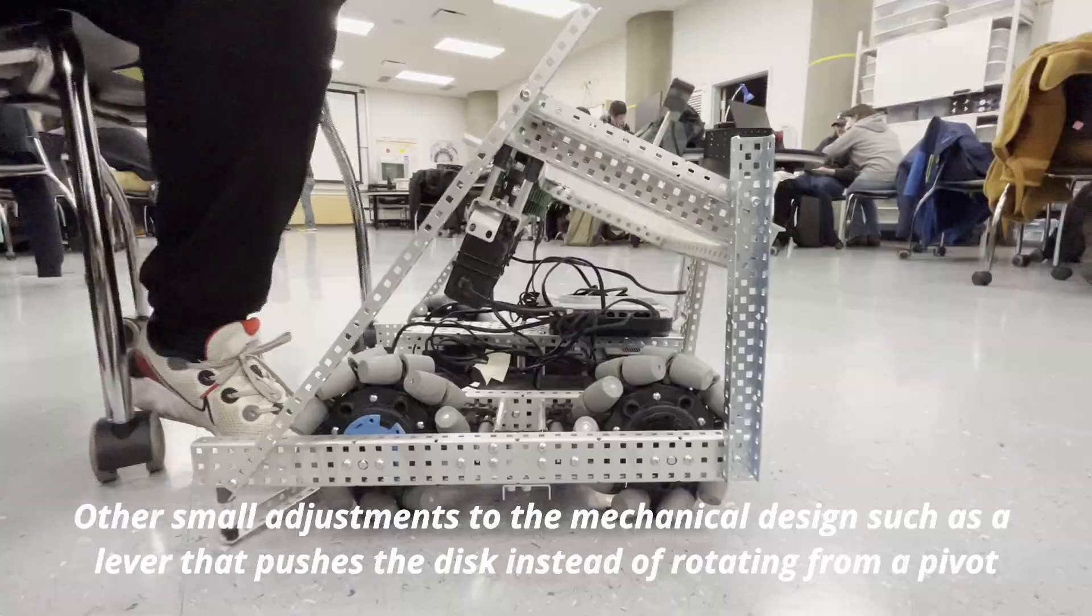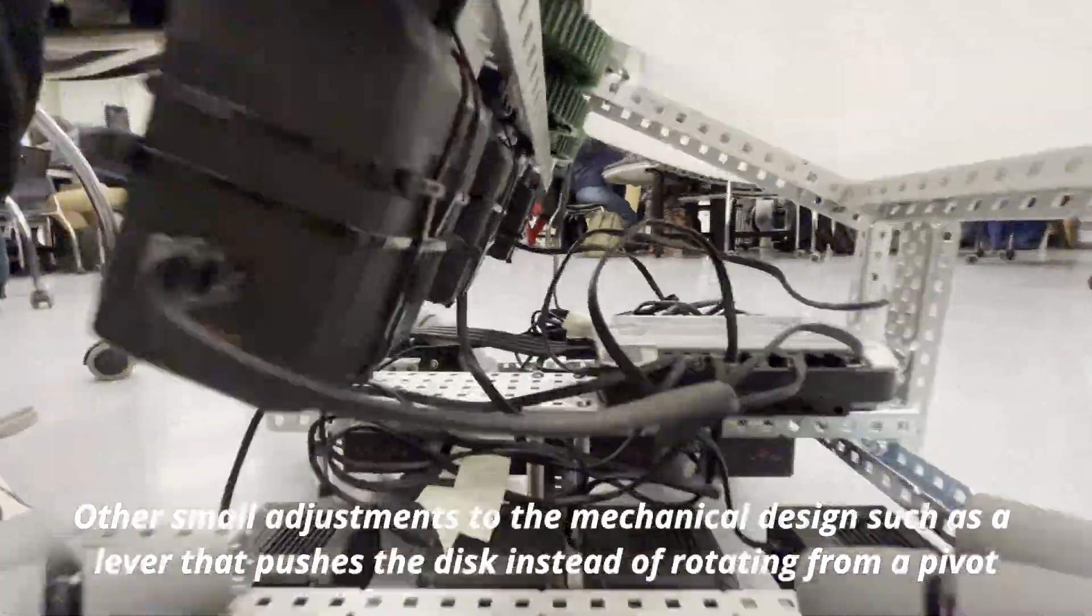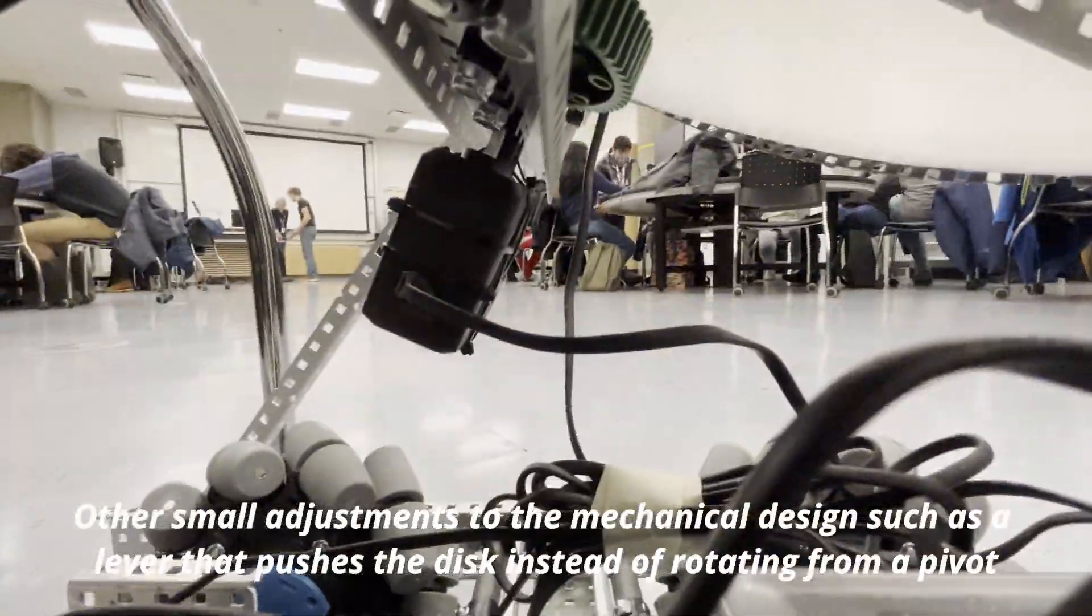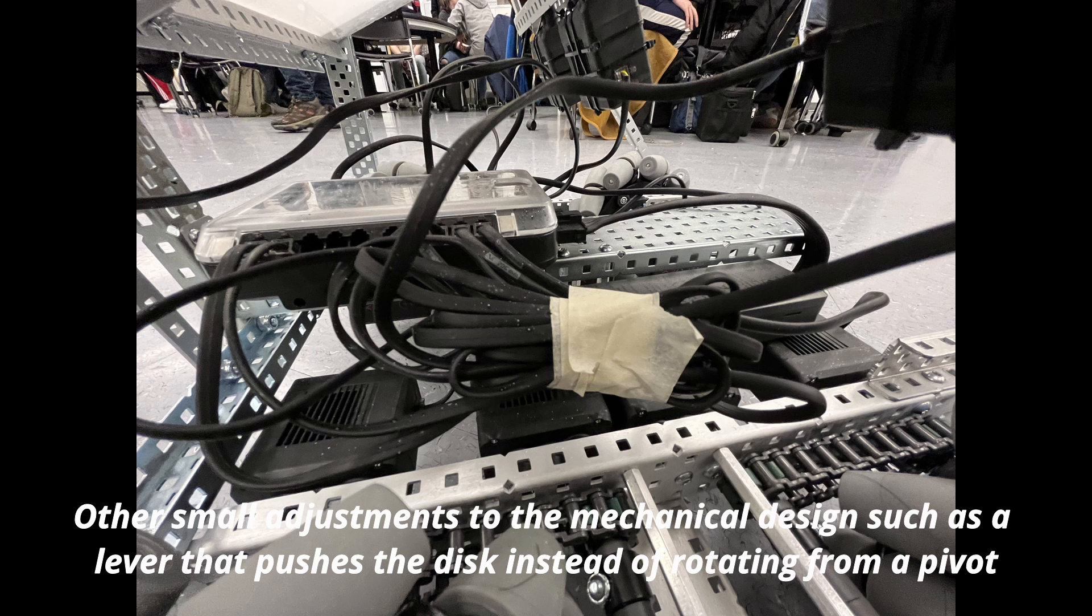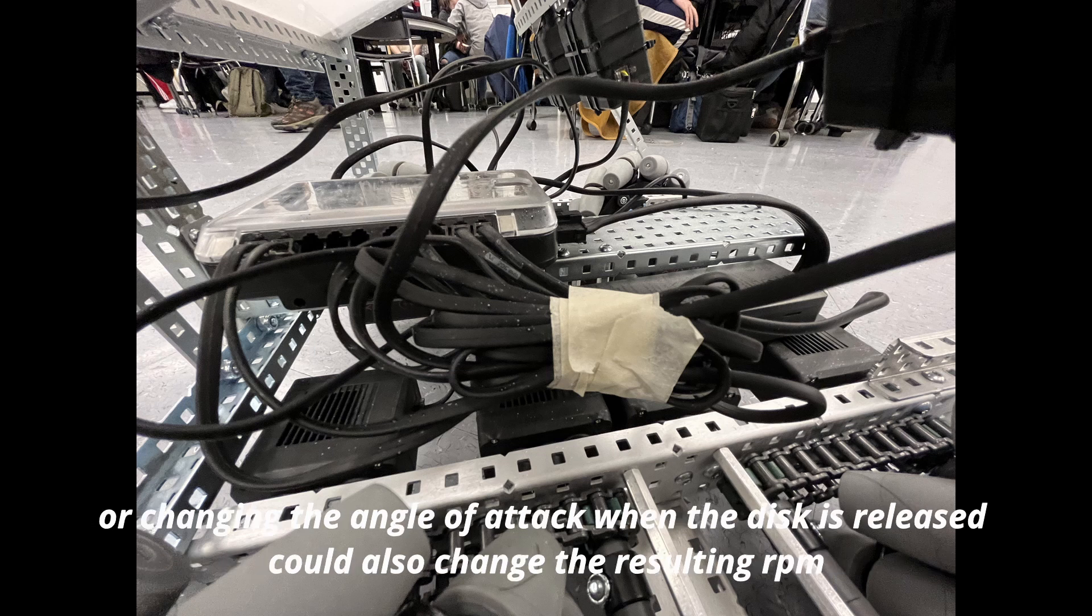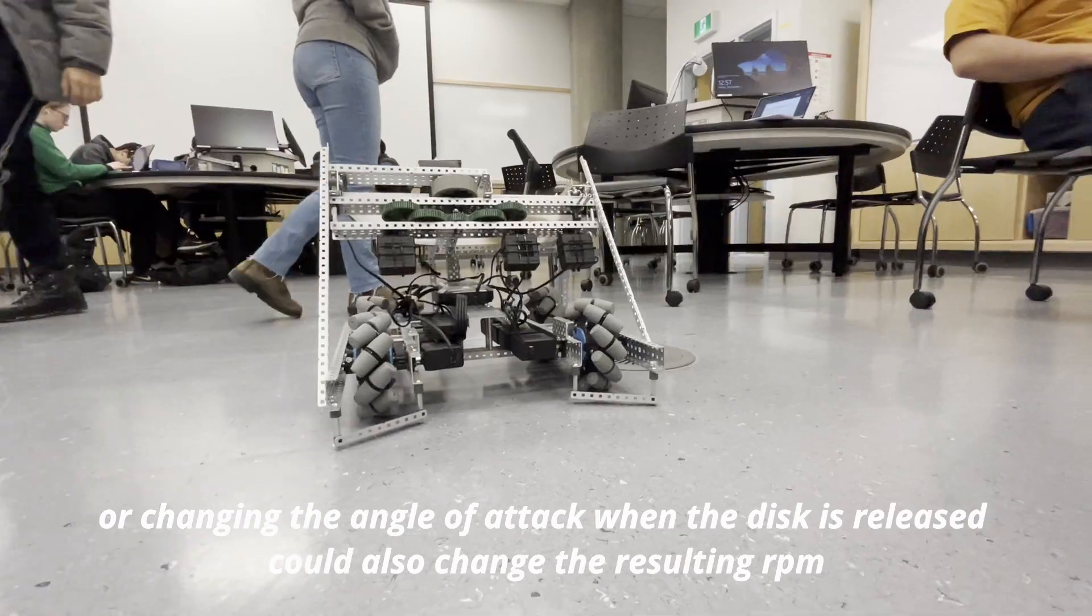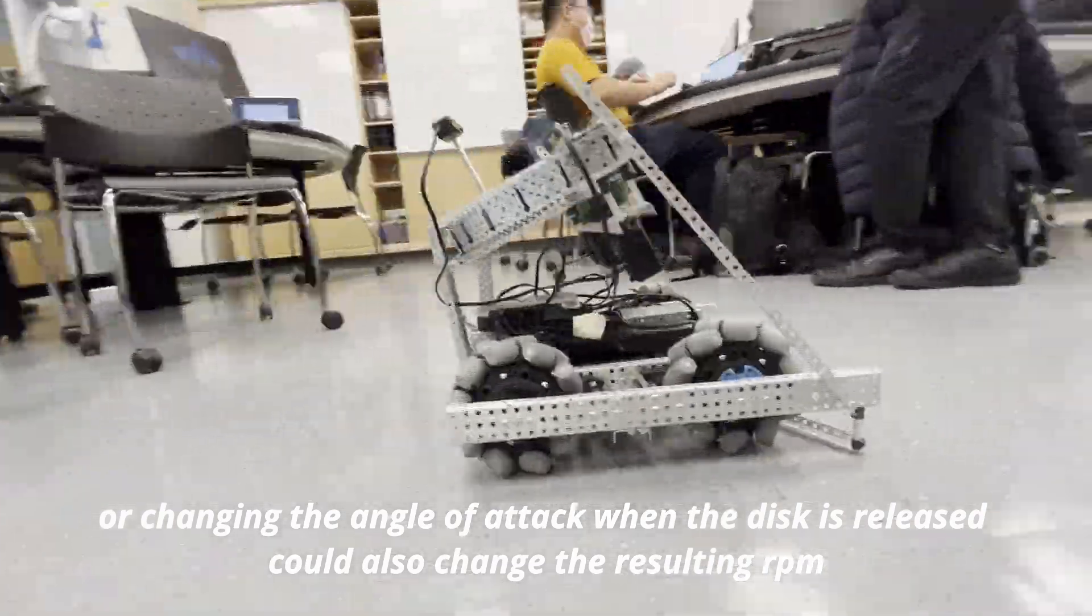Other small adjustments to the mechanical design such as a lever that pushes the disc instead of rotating from a pivot or changing the angle of attack when the disc is released could also change the resulting RPM.